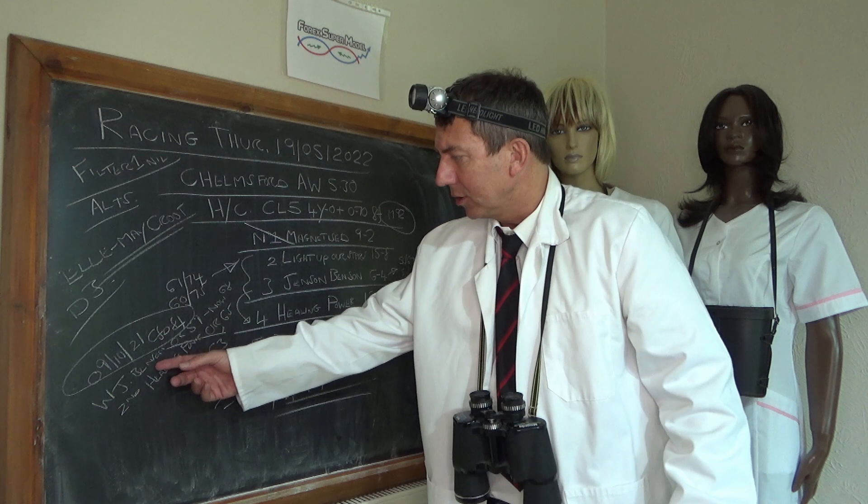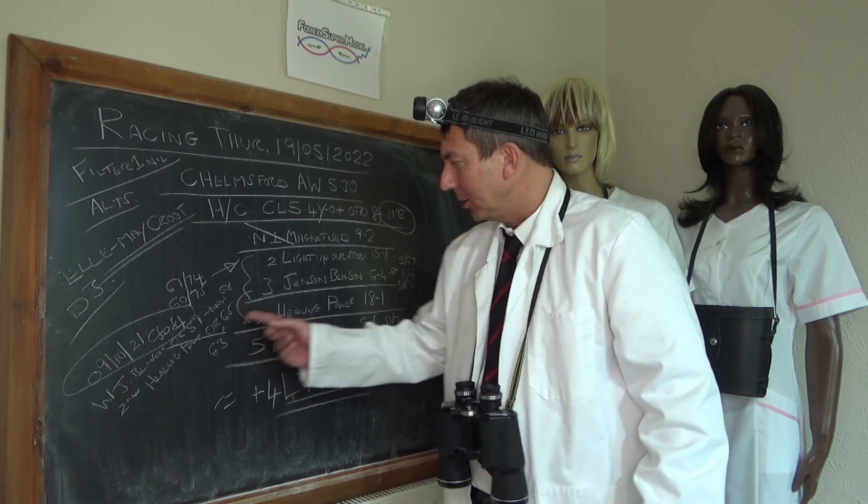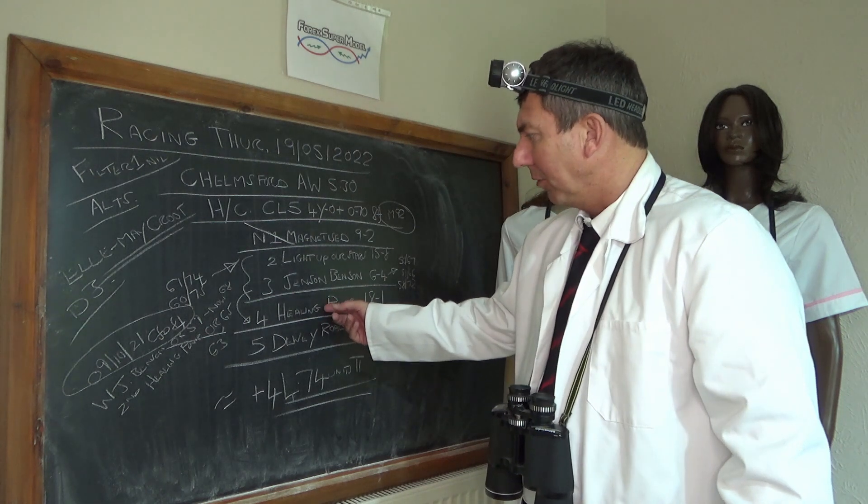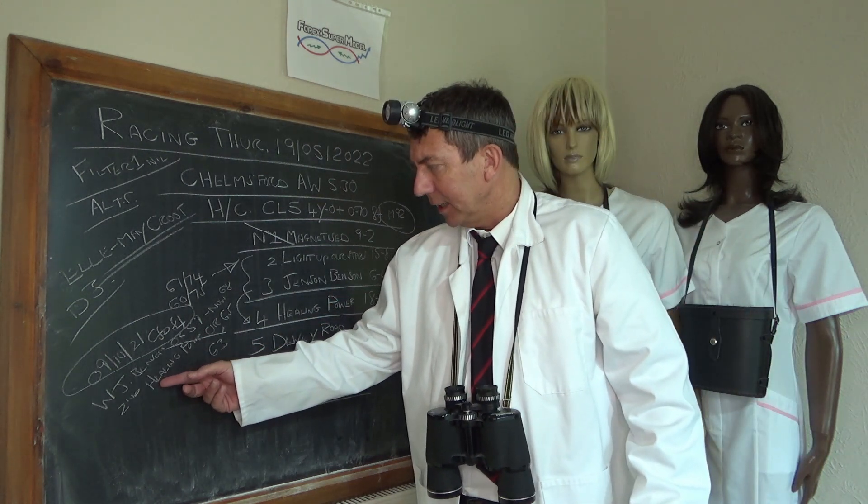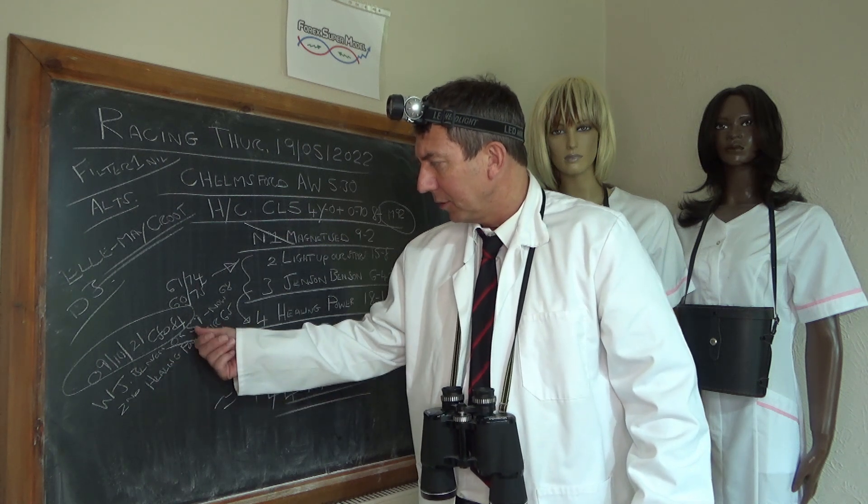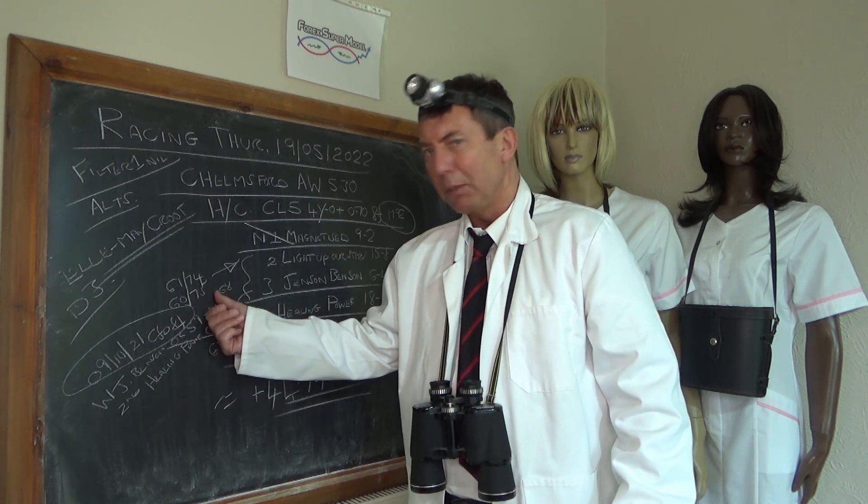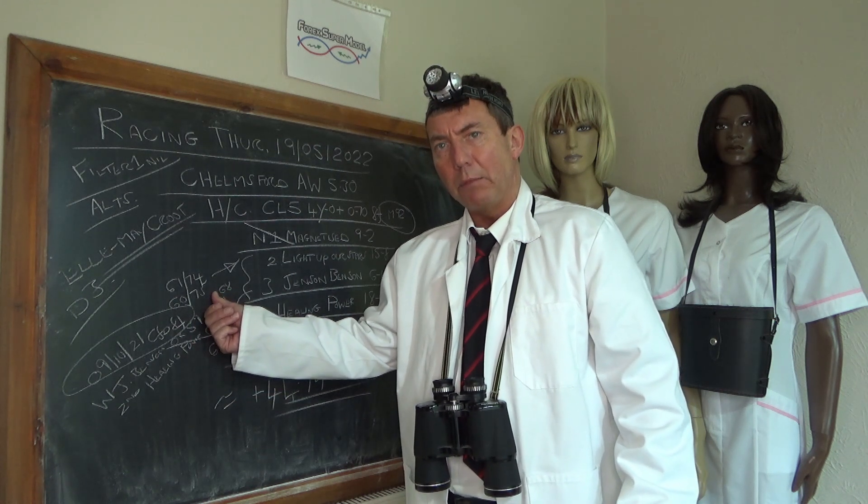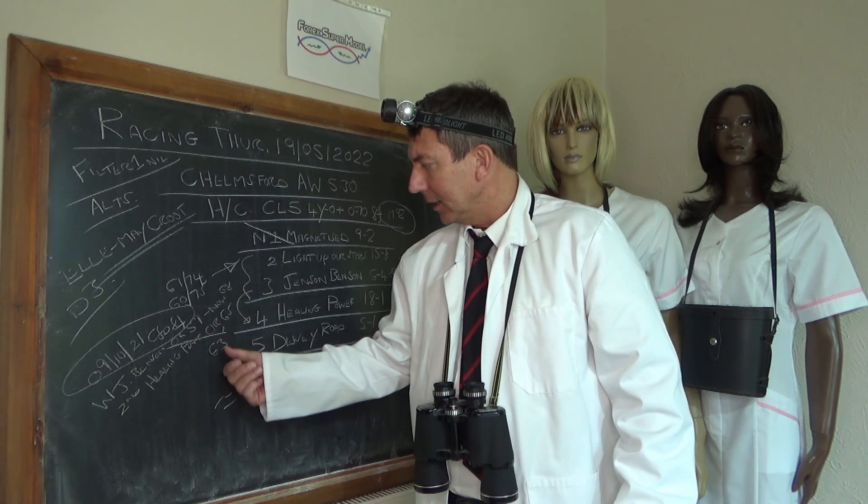With Healing Power, which is the horse we're interested in, number four, coming second, it front ran that and faded and didn't quite hang on. Now Jenson Benson was running off official mark of 59 in that race, and he's now running off 68, so it's nine pounds pumped on that. And Healing Power was off 65, and it's now 63.